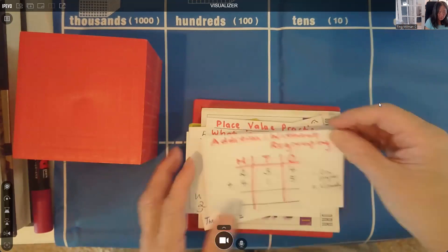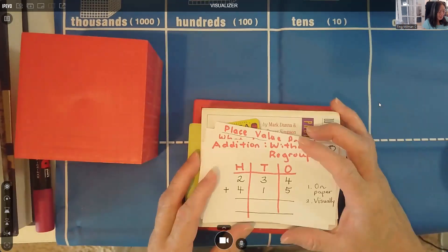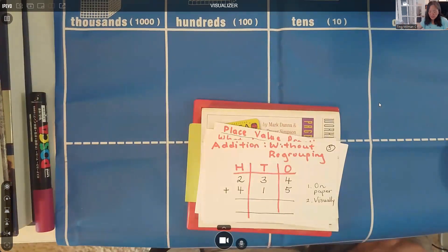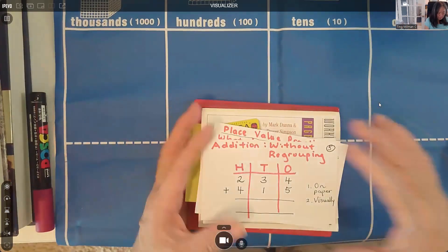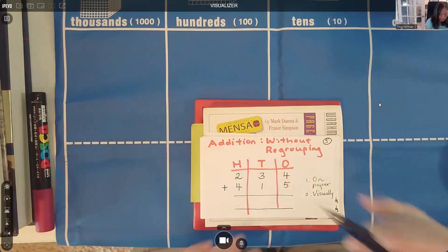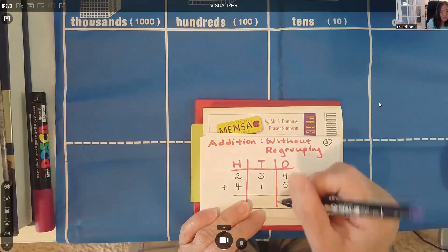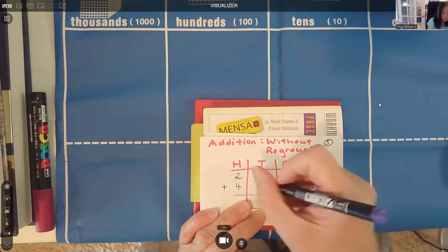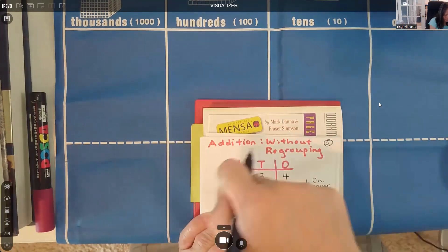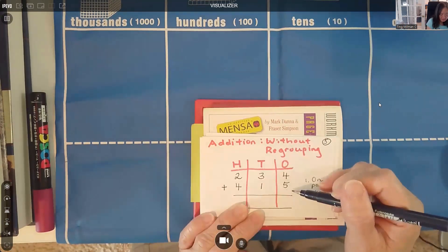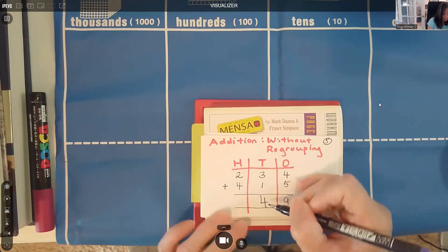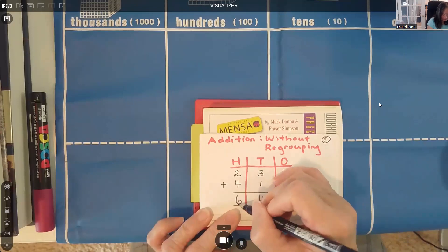Now we're going to move on to addition without regrouping — I think this is the fun part because it's easy. We arrange the numbers on paper and always start from the ones column. When there's more, you can carry on to the next column, moving right to left. So four plus five is nine, three plus one is four, two plus four is six.